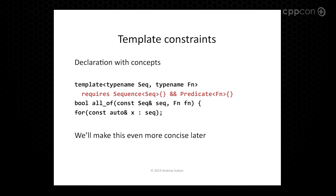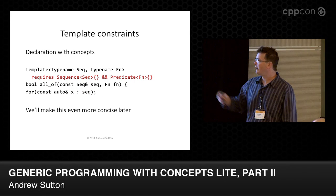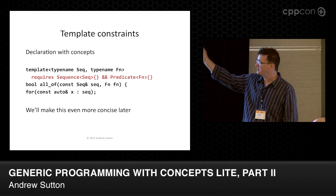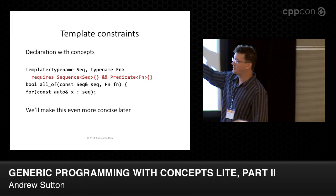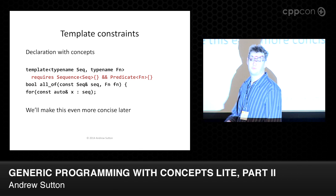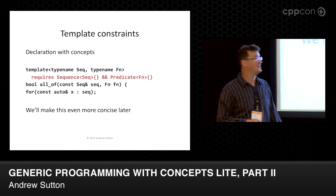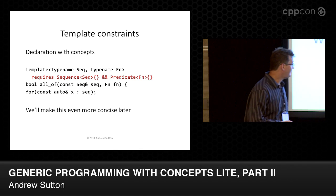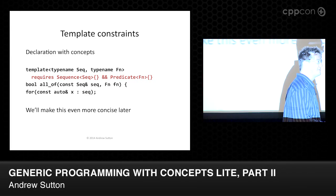Sorry, I just wrote these slides this morning. I haven't rehearsed them quite as well as I could have. So this is our previous declaration from the last talk: you have a template, type name, seek type, name function, requires that expression, and then the usual declaration. Apparently with a trailing for-clause — ignore that, apparently I did write that this morning. Ignore the for loop; that's supposed to be a declaration. We're going to improve the way this looks later by fixing the bugs.